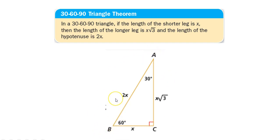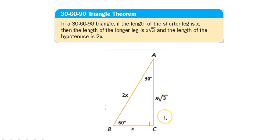In any right triangle that has a 30-degree angle and a 60-degree angle — and also a 90-degree angle, that's what makes it a right triangle — the short leg, the leg opposite the 30-degree angle, is going to be x. The longer leg, the side opposite the 60-degree angle, is going to be x times the square root of 3. And the length of the hypotenuse is going to be the length of the shorter leg doubled, so 2 times x. This relationship always holds true in any 30-60-90 triangle.